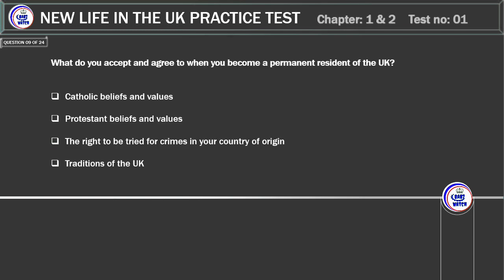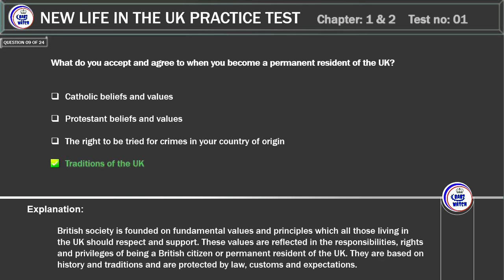What do you accept and agree to when you become a permanent resident of the UK? Catholic beliefs and values. Protestant beliefs and values. The right to be tried for crimes in your country of origin. Traditions of the UK. Correct answer: traditions of the UK. Explanation: British society is founded on fundamental values and principles which all those living in the UK should respect and support, reflected in responsibilities, rights and privileges of being a British citizen or permanent resident, based on history and traditions and protected by law, customs and expectations.